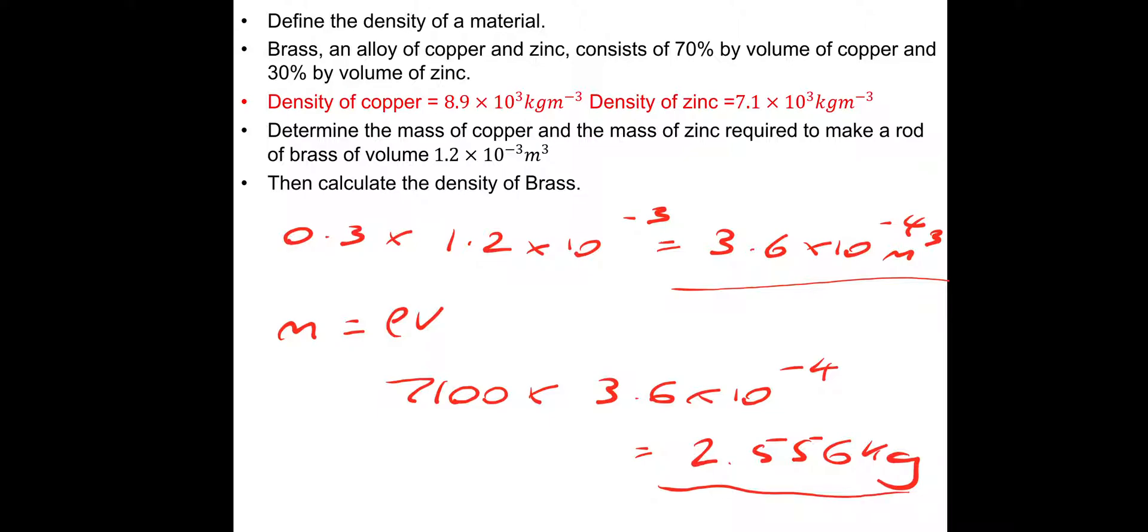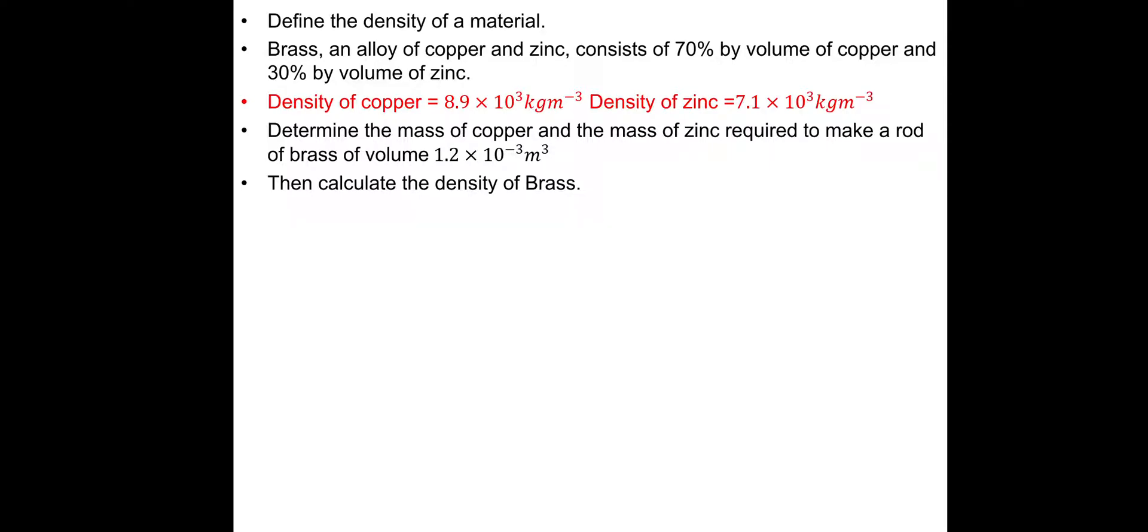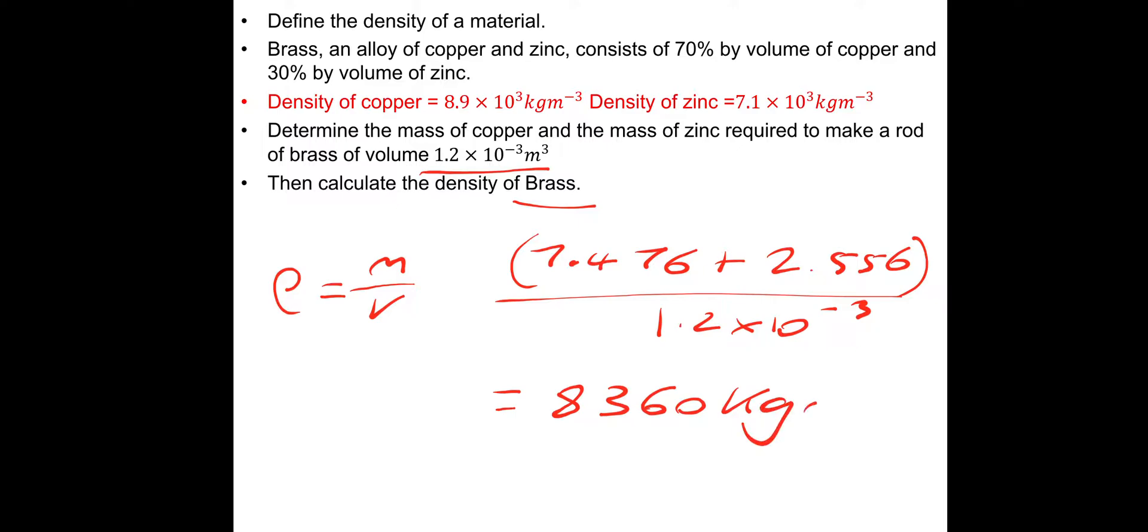That's that question. Determine the mass of copper and the mass of zinc. Then we just need to calculate the density of brass. Density is mass over volume. We need the total mass, so the mass of the copper and the zinc. We need to do the 7.476 plus the 2.556. So, that's the masses of the copper and zinc. And then we just need to divide by the volume. And the volume is the 1.2 times 10 to the minus 3. That gives us a density of 8,360 kilograms per cubic meter.